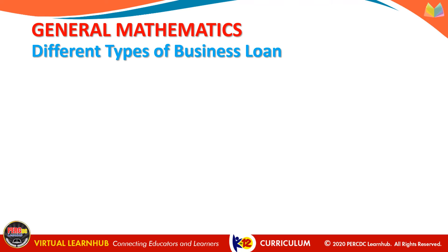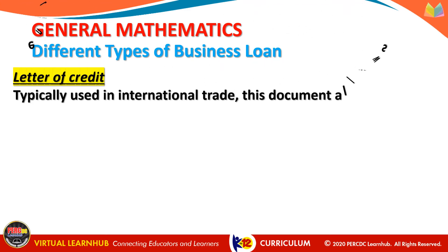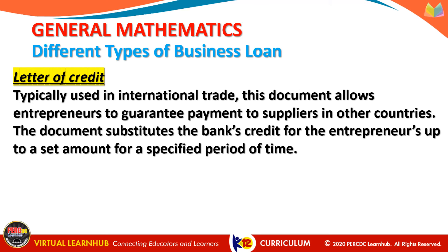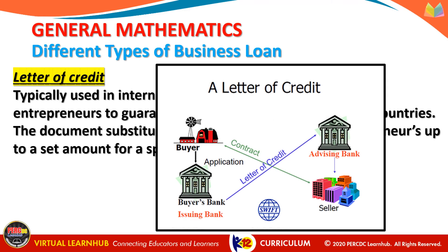The last type of business loan we will discuss is the letter of credit. A letter of credit is typically used in international trade. This document allows entrepreneurs to guarantee payment to suppliers in other countries. The document substitutes the bank's credit for the entrepreneur's up to a set amount for a specified period of time, giving security while buying and selling. For seller protection, if the buyer is unable to pay, the issuing bank's LC will pay the seller if the seller meets all the terms in the letter. For buyer protection, if delivery does not happen, the buyer gets a refund by issuing a standby LC. Thus, a letter of credit provides security when buyers and sellers are in different countries.